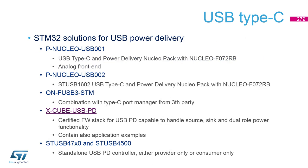Now a bit closer to ST's offer with USB Type-C and power delivery. The oldest demonstration board offered is PNUCLEUSB001, which uses the STM32F072 with an analog front end. The analog front end is used only for voltage level adaptation according to the USB-C and power delivery specification, while all tasks — covering the stack and communication — are done by the STM32. However, the resources demanded on the STM32 side are quite significant for handling USB power delivery communication.